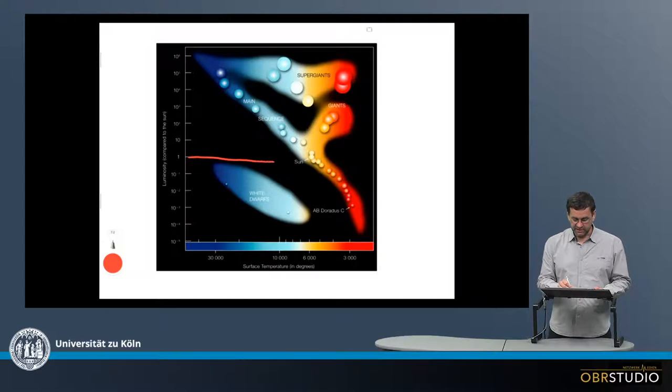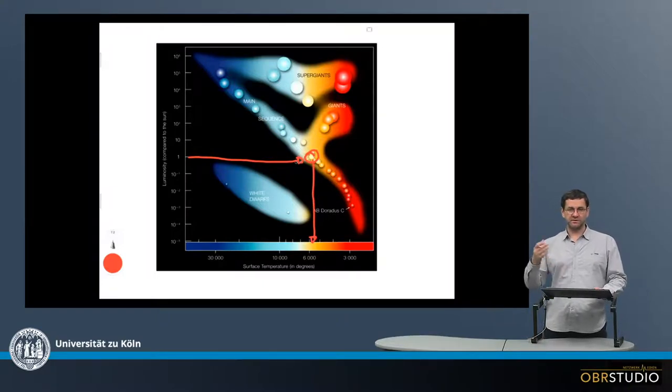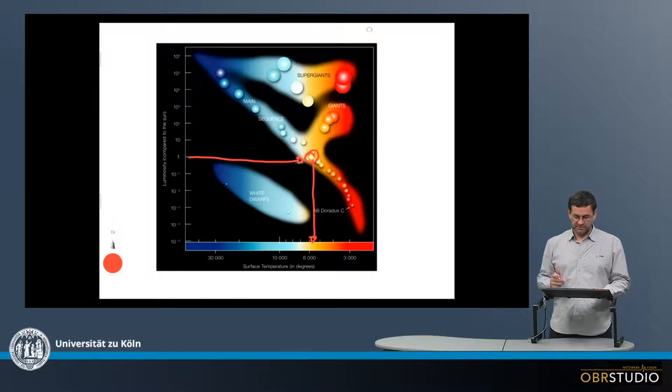Now the sun is, as I said, here at a luminosity of 1 and at a temperature of about 6000 degrees. It doesn't really matter, it's Kelvin, Celsius about. It doesn't make a big difference here.